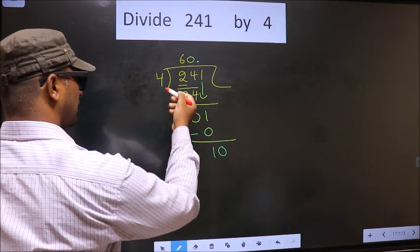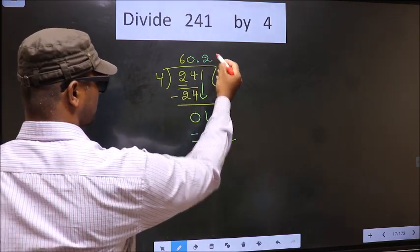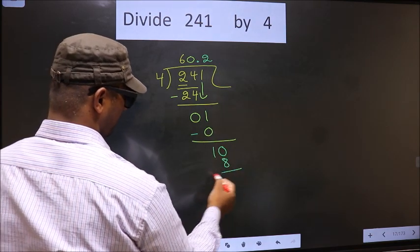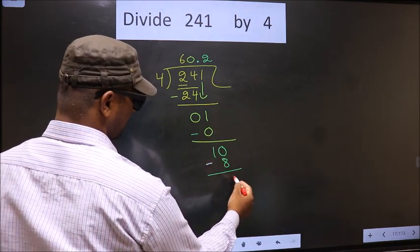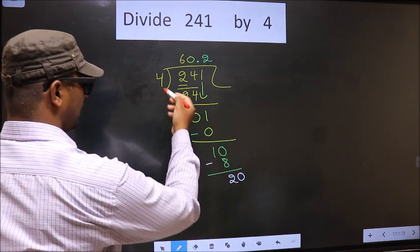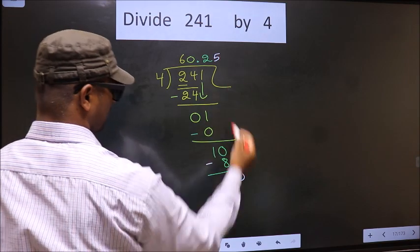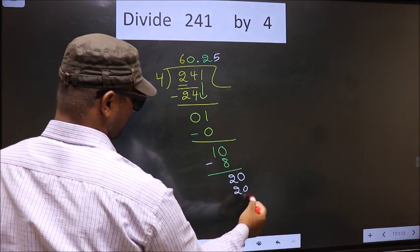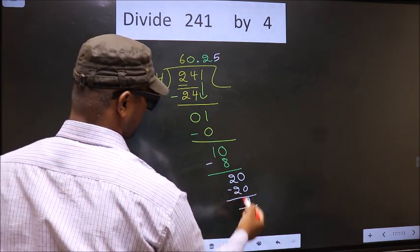A number close to 10 in 4 table is 4, 2 is 8. Now, you subtract. 10 minus 8 is 2. Now, I take 0. When do we get 20 in 4 table? 4, 5 is 20. Now, you subtract. You get 0.